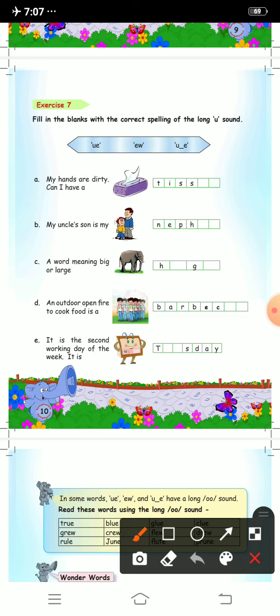This is u e, then ew, and u dash e. What is the sound? These are all different spellings, but the sound will remain the same and that is u.